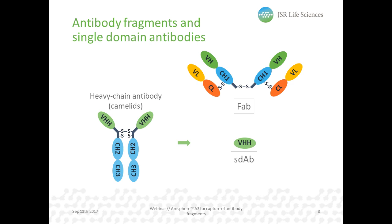After monoclonal antibodies, a variety of antibody fragments is becoming an important class of therapeutic proteins. Various forms of the antigen-binding fragment are Fabs, and from the variable domain of the heavy chain antibodies from camelids, the VHH single-domain antibodies are derived. These VHHs are more stable than full-size mAbs and can be produced in microorganisms. Due to the lack of an Fc region, these antibody fragments cannot be captured with most engineered protein A domains.